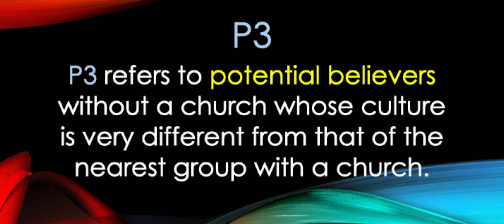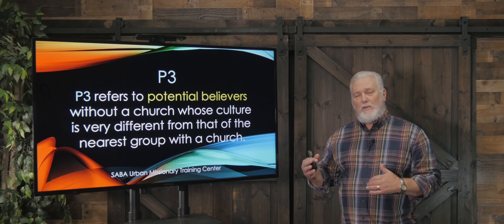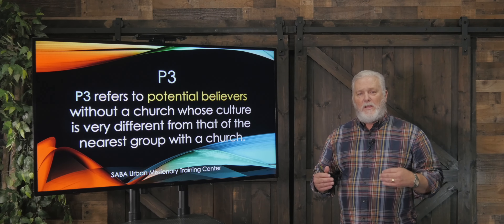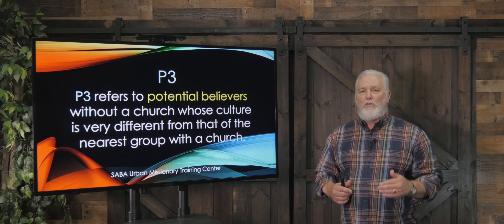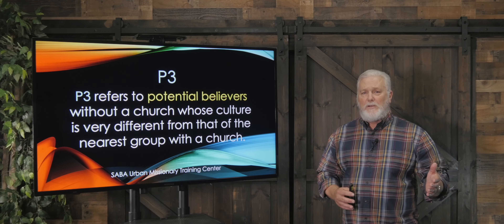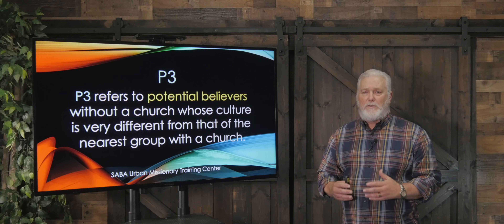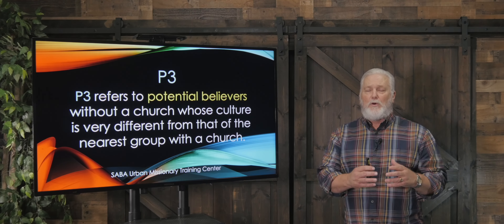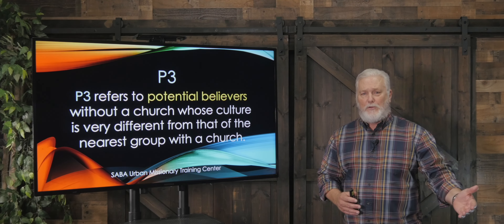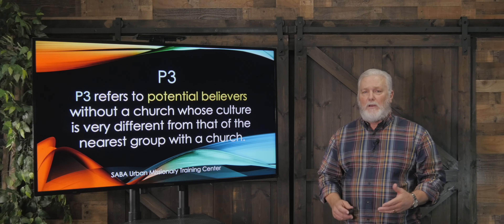Let's look at P-3, a very different culture. P-3 refers to potential believers without a church whose culture is very different from that of the nearest group with a church. That could be from one tribal setting to another tribe — a very different culture, different language. They would have to cross a whole lot of barriers in order to access that church. P-3 is obviously the most difficult to reach. That person would be expected to make a whole lot of changes. What we want to do is make the gospel available in every context, so the P-2 and P-3 person does not have to cross a whole lot of barriers to understand the gospel and join a local church.